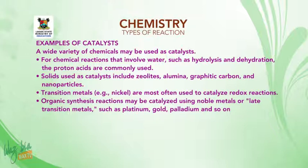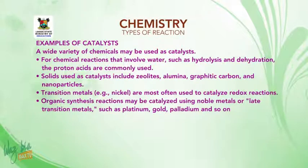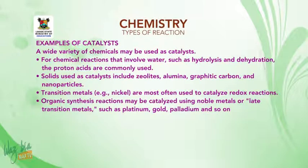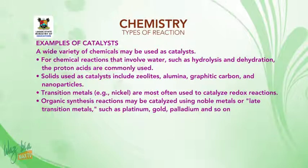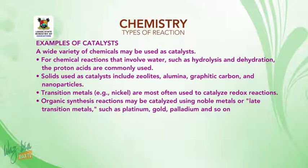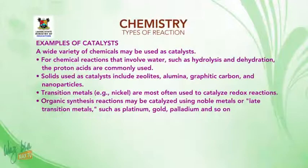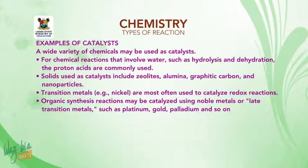Examples of catalysts. A wide variety of chemicals may be used as catalysts. For chemical reactions involving water such as hydrolysis and dehydration, proton acids are commonly used. For solid catalysts, these include zeolites, alumina, graphitic carbon, and nanoparticles. Transition metals such as nickel are often used to catalyze redox reactions. Organic synthesis reactions may be catalyzed using noble metals or late transition metals such as platinum, gold, and palladium.